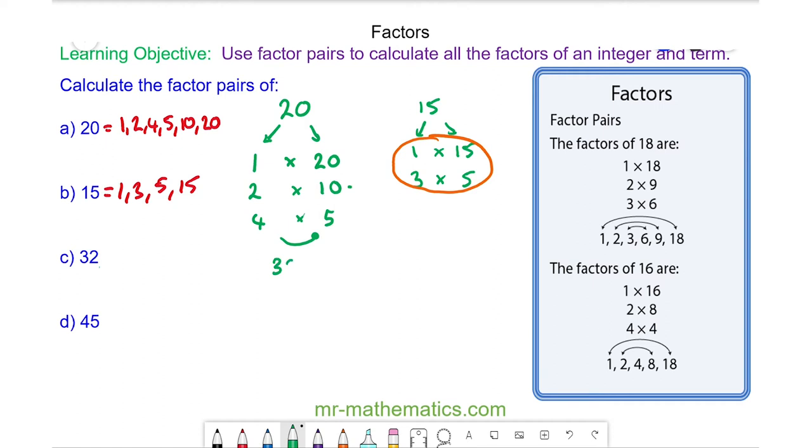So for 32 we know it is 1 times 32. It is even so it will be 2 which is 16 times. We know 4 is a factor of 16 so it will also be a factor of 32, and 4 goes into it 8 times. And 5 doesn't go into it, neither does 6 or 7. So we know we have covered all the factors of 32.